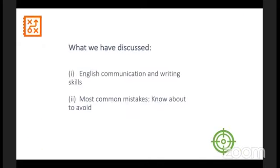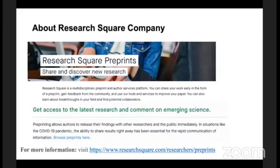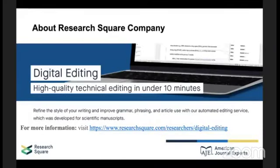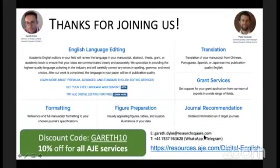We've talked about the most common mistakes in English: plagiarism, tenses, spelling conventions, inappropriate word use, and word use confusion. English communication and writing skills are what we are all about — teaching and training. If you know about the most common mistakes, you can know how to avoid them. We are Research Square Company — a preprint server, the largest in the world, with more than three and a half million preprints uploaded. Thank you so much for joining us.